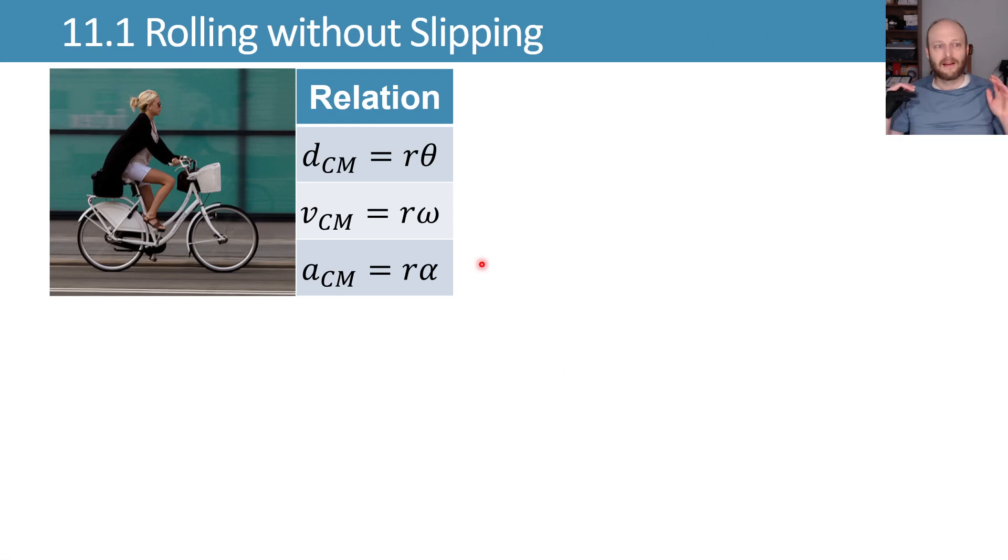On to rolling without slipping. Let's say we have a wheel here, and this wheel on the bike is going round and round, and hopefully rolling without slipping so it can pull us along.